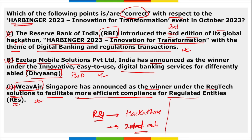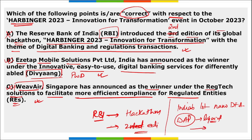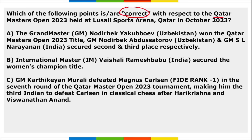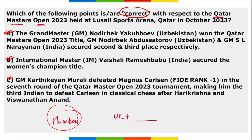India's first nano DAP — liquid nano diammonium phosphate — plant was set up in Gujarat, by IFFCO. Next: regarding Qatar Masters Open 2023 held in October 2023, all three options are correctly mentioned. Apart from this, Mumbai became the second most polluted global city as air quality worsened. United Kingdom partnered with Tamil Nadu on smart tech sustainable resource management.